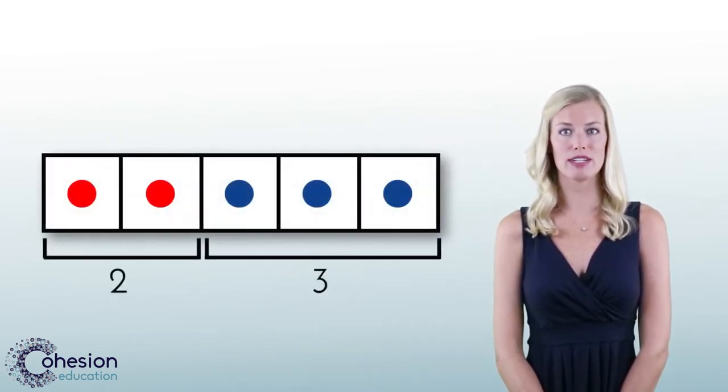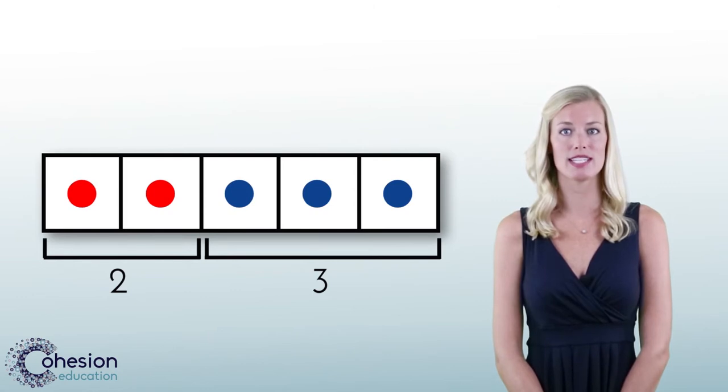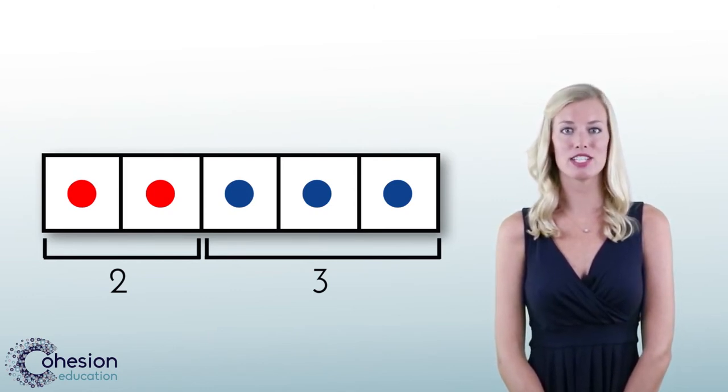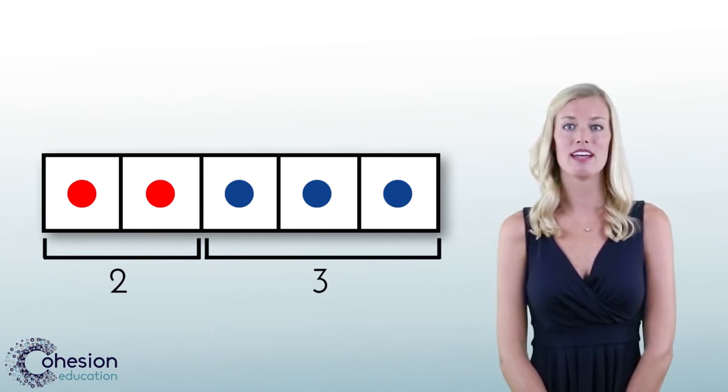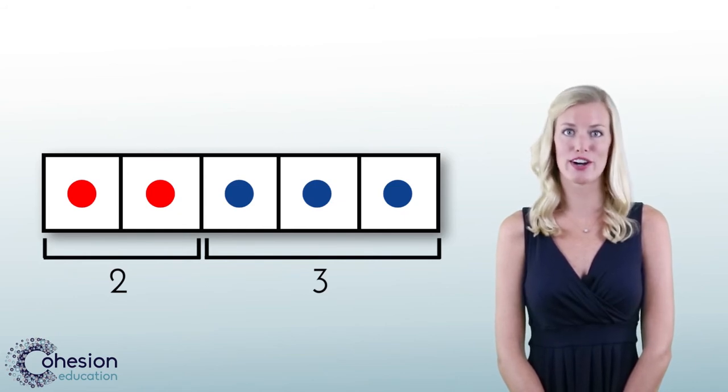Counters will be used to display different combinations to make the number five in a five frame. A five frame is a tool used for students to visualize the numbers from zero through five. Counters are colored circular objects that can be manipulated to represent a number. These are commonly used to help students visually see how many objects are in a group.